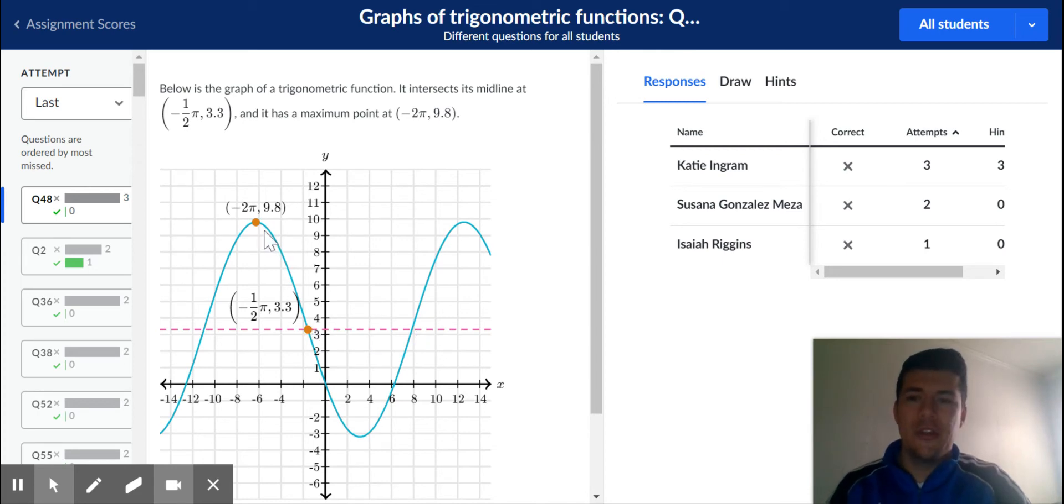So you're given these clues. The clue that you're given is it gives you the point at the maximum and the point at the midline. So what you need to know is that that is one-fourth of the length of the period.